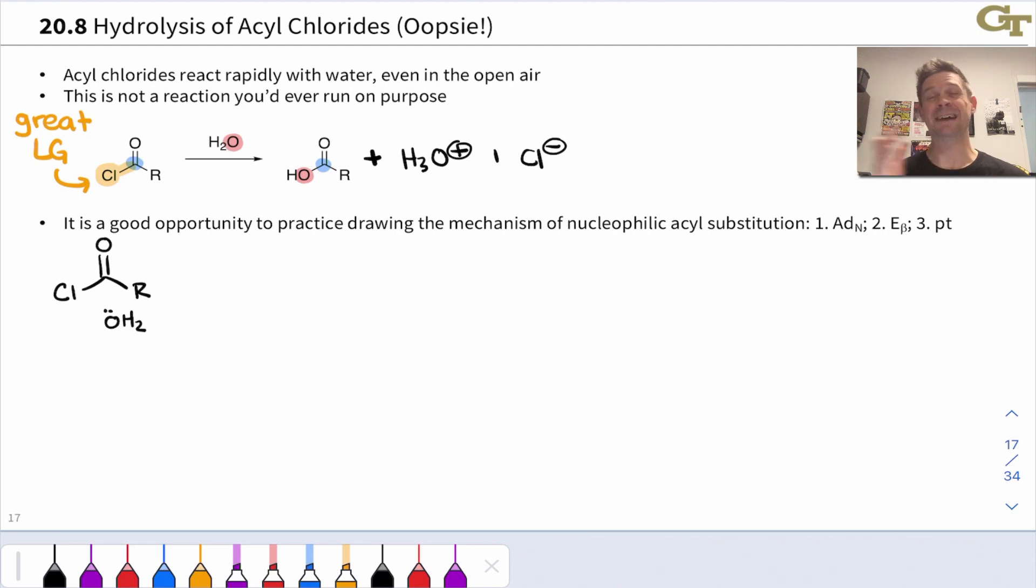You generally never run this reaction on purpose because we just saw that you can make acyl chlorides from carboxylic acids, but it is a good opportunity to practice the canonical mechanism of nucleophilic acyl substitution. In this reaction that carbonyl carbon is so electrophilic that water can add to it directly getting us to this zwitterionic intermediate that you see here.